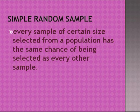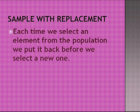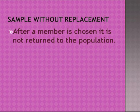A simple random sample is one where every sample of a certain size selected from a population has the same chance of being selected as every other sample. In sampling with replacement, each selected element is put back before a new one is selected. In sampling without replacement, after a member is chosen, it is not returned to the population.